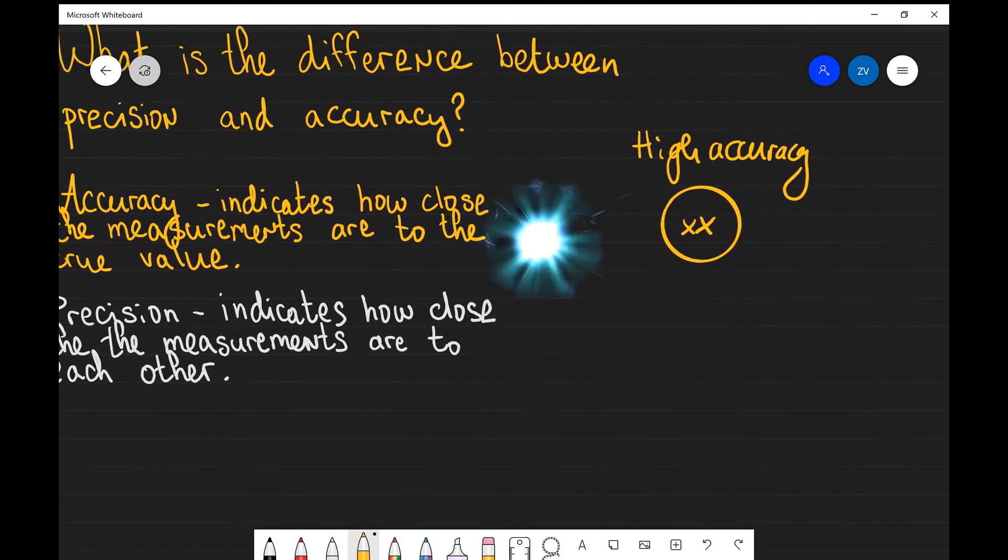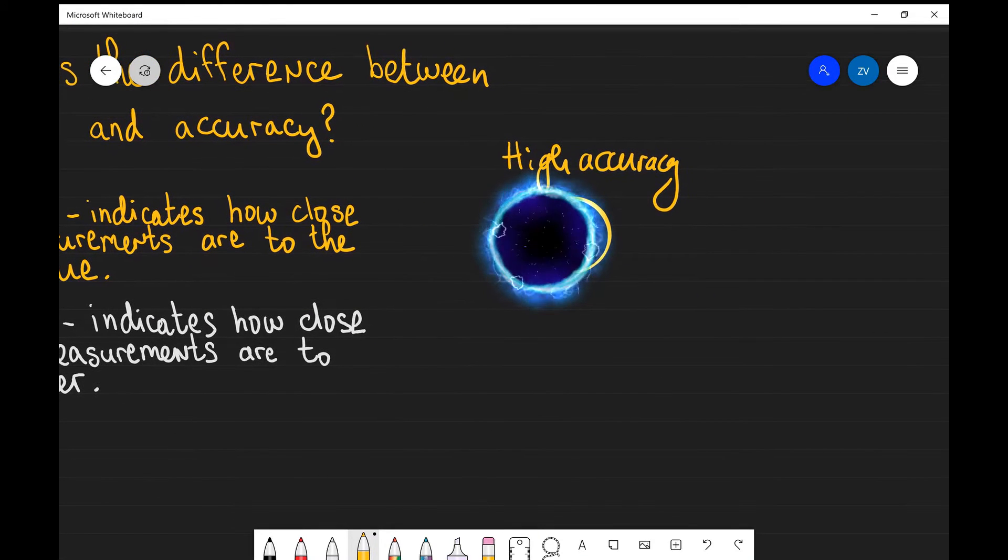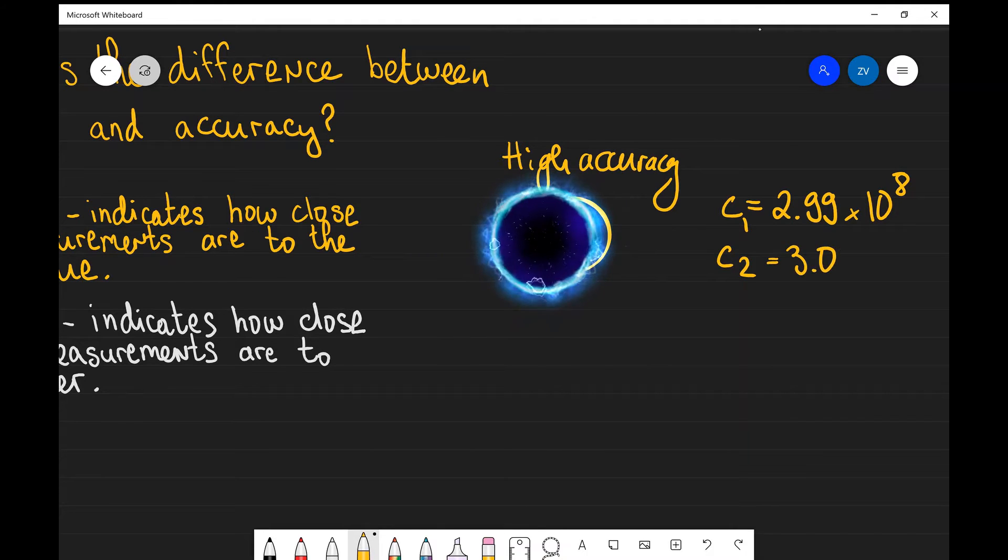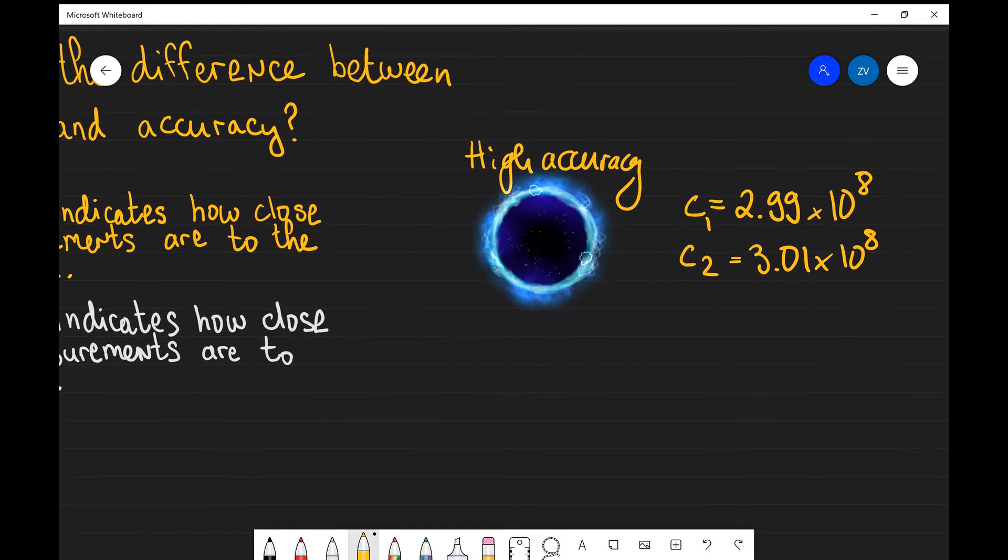A sample of high accuracy could be some measurements. Let's say that we make a few measurements of the speed of light. We measure C1 to be 2.99 × 10^8 and C2 to be 3.01 × 10^8. Both of these measurements are in meters per second.